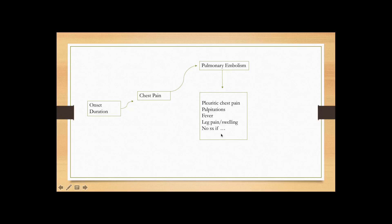Most blood clots that go to the lungs come from the leg. Importantly, some patients have no symptoms at all if the PE is very small and peripheral, or not involving any pleura or too much parenchyma. The mechanism of chest pain is due to involvement of the pleura, and the mechanism of shortness of breath is due to involvement of the parenchyma.